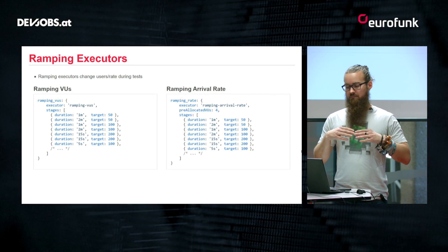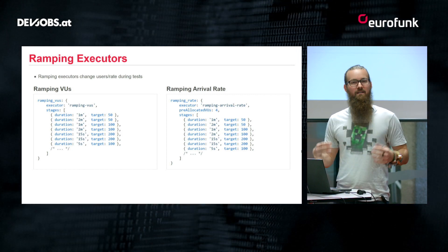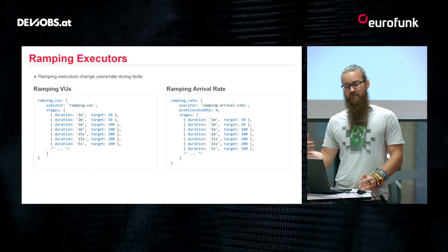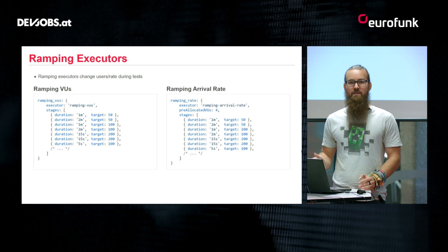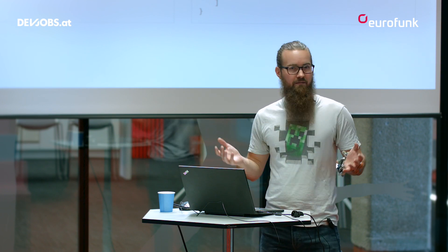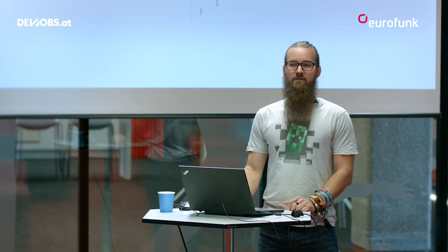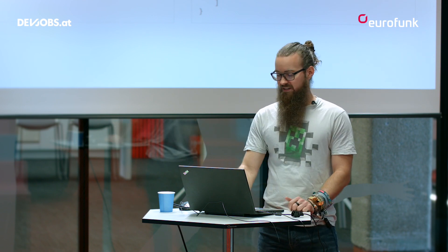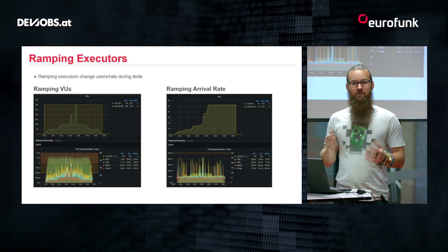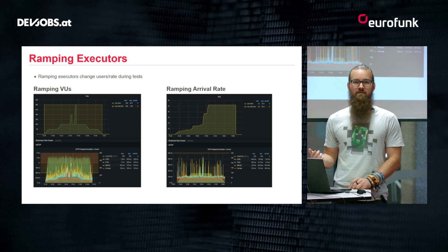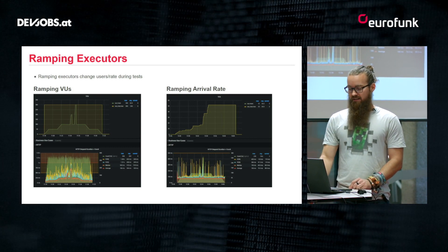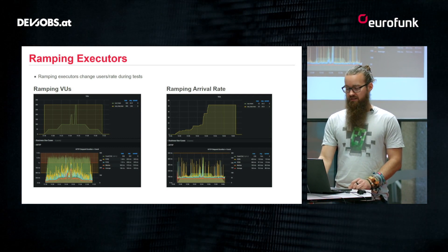You're not limited to a static load — you can also define ramps. For example, start with zero users, ramp up to 50 users over one minute, stay at 50 for two minutes, then increase to 100 users over another minute. The same applies to arrival rate: start at zero requests per second, ramp to 50 over one minute, hold for two minutes, then ramp up again — or down. When visualized, for ramping virtual users the count matches what you defined, while for ramping arrival rate K6 automatically injects users, and the request count in the charts matches the defined rate.